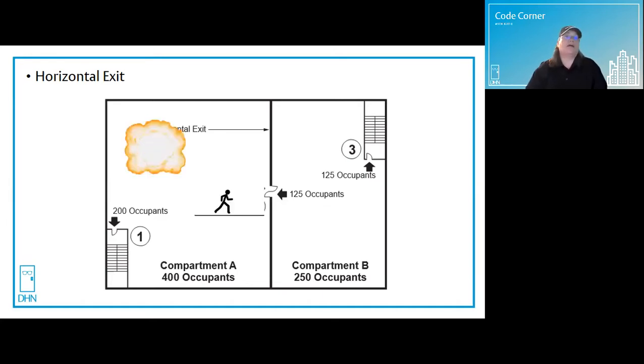If there's a fire in compartment A, Thinking Man has to get to the nearest exit, which is the horizontal exit. And once he crosses through, he's doing backflips because he knows he's safe. And now he can continue his path over to exit door three, which is a vertical exit, the stair, and make his way out of the building.